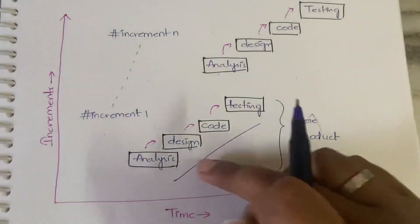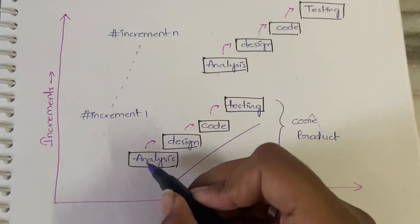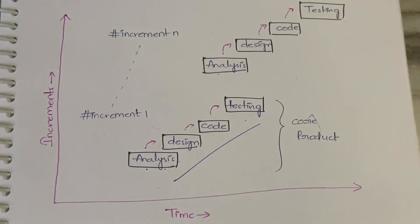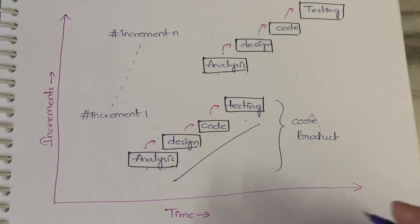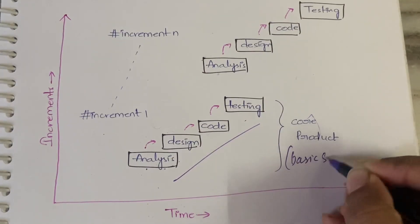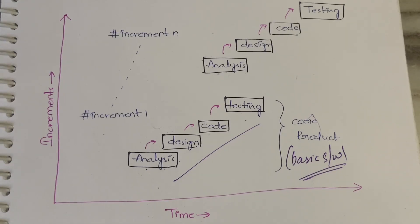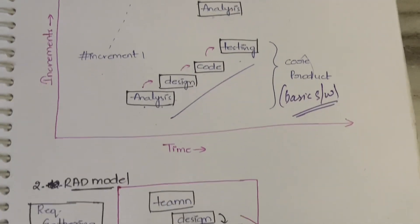So the first increment is called the core product — that's simply the basic software you develop initially. For this core product, you keep continuously adding requirements according to need, enhancing it further with each increment. You are sequentially adding requirements and making it a complete product — that is what happens in the incremental model. The first increment is the core product, and subsequent increments build on top of it.